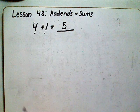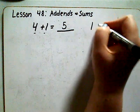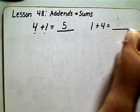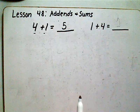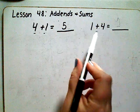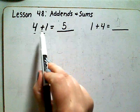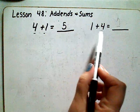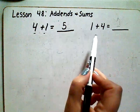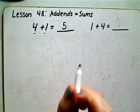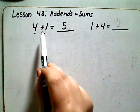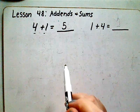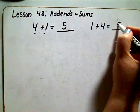Here's a question: what if I take one plus four? What would that equal? Do you notice anything similar? In the first example our add-ins are four and one, and in this example our add-ins are one and four. They are the same add-ins, just in a different order. So if four plus one equals five, then one plus four is also five.